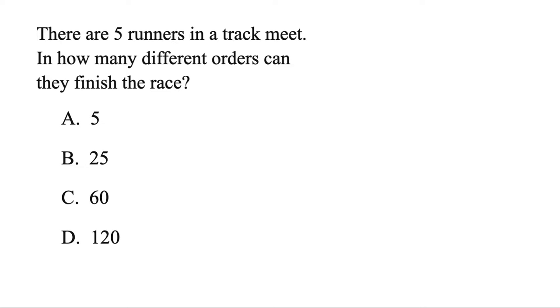There are five runners in a track meet. In how many different orders can they finish the race? The key word is order. Let's put five spots here. And this one represents first place. How many different ways could they do that? Well, any of the five could get first. But once that person crosses, then any of the four remaining could get second. And so on, all the way down to one.